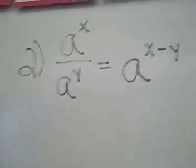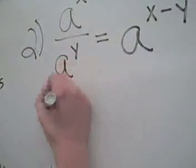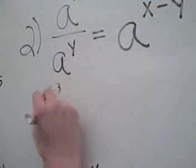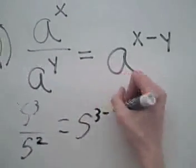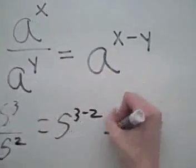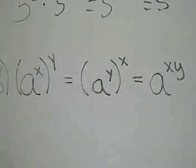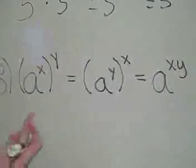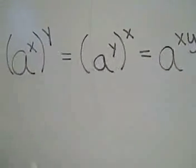The second rule: a to the x over a to the y equals a to the x minus y. So 5 cubed over 5 squared would be the same thing as 5 to the 3 minus 2, or just 5 to the first, or 5. The third rule: a to the x to the y — or a to the y to the x — equals a to the xy.